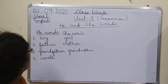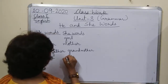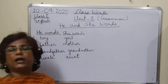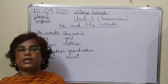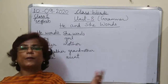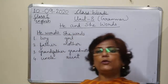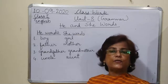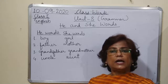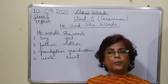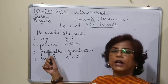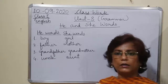Similarly, uncle is for all the relations. Uncle for she words is aunt. In Hindi, we have specific names — mausa, mausi, cha-cha, cha-chi, dada, dadi, nana, nani. But in English, we have only grandfather, grandmother, uncle, aunt. The next is brother and sister. Then man and woman. Man is aadmi, woman is aurat. Boy is ladka, girl is ladki.